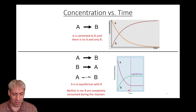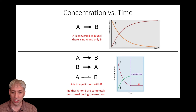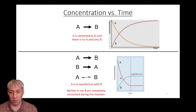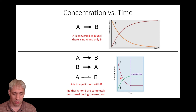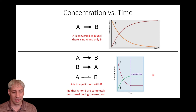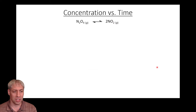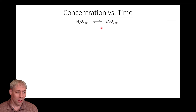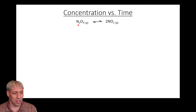That threshold — when you've reached the plateau — is where you've reached equilibrium. Anything before that is non-equilibrium; the system isn't at rest and the rates of forward and reverse aren't matching. After that line, you are at an equilibrium condition. Here's a real example: N₂O₄ in equilibrium with 2 NO₂.